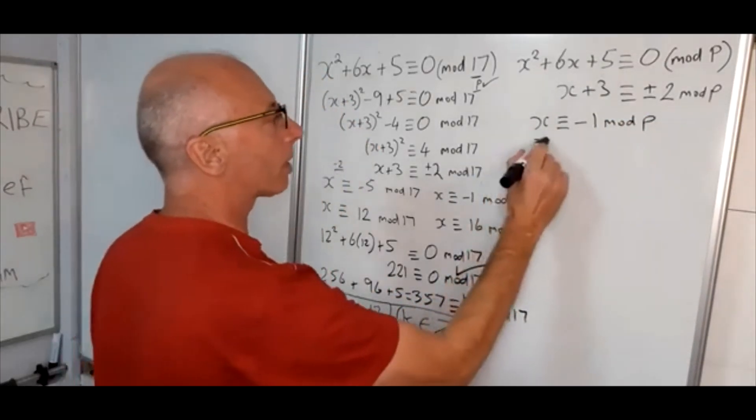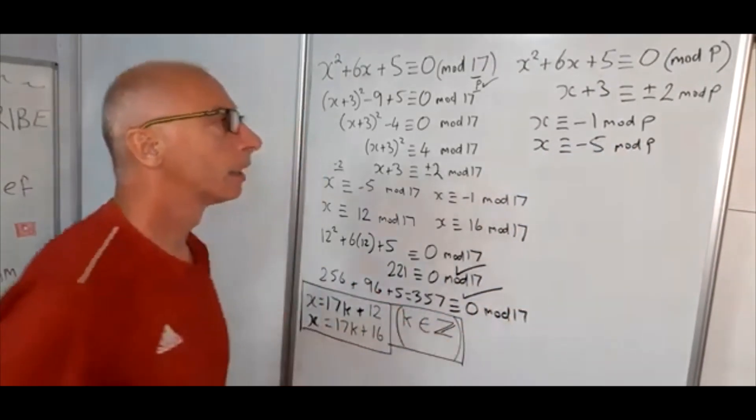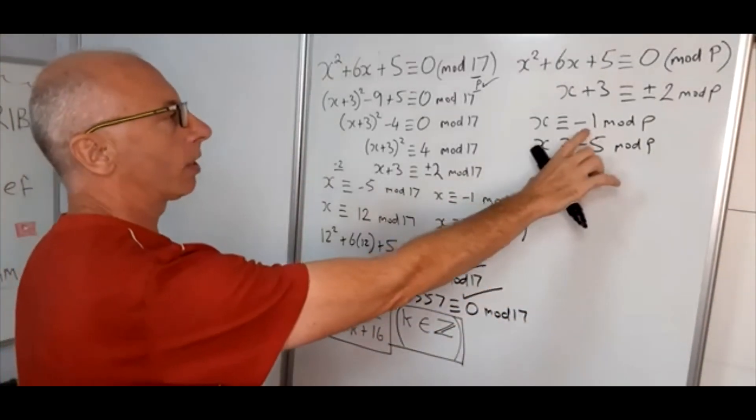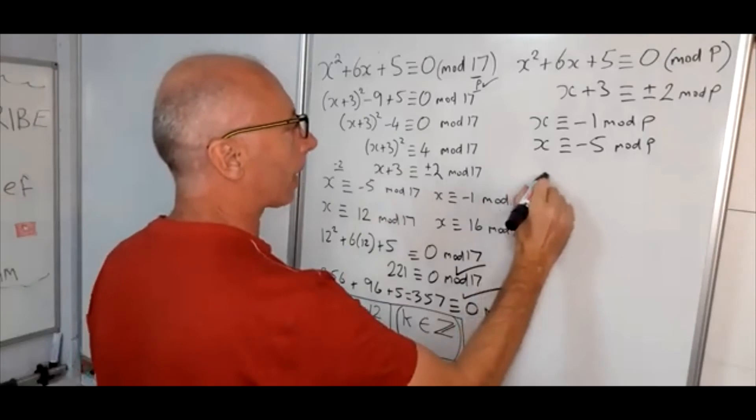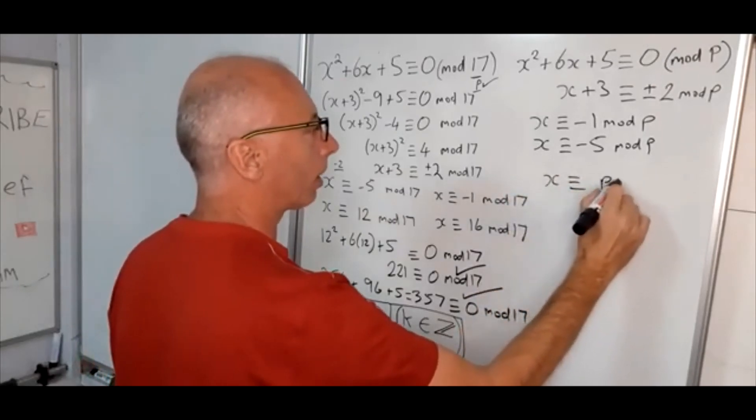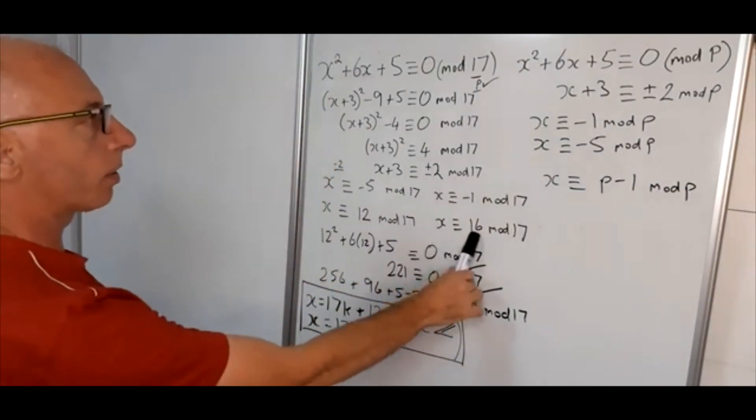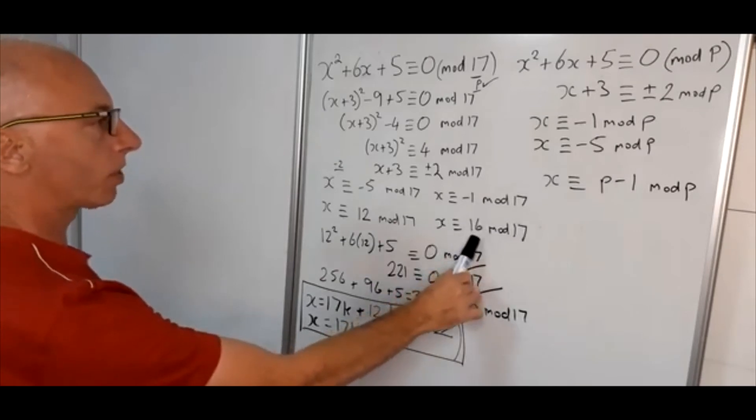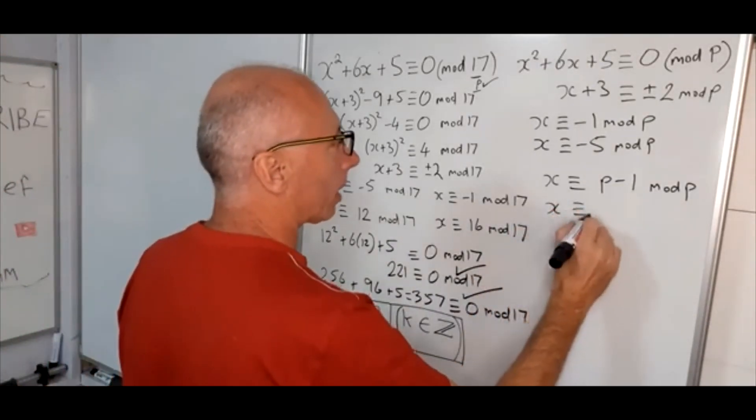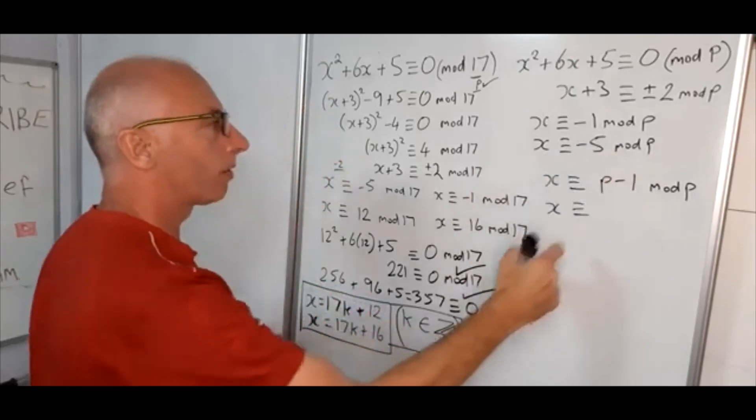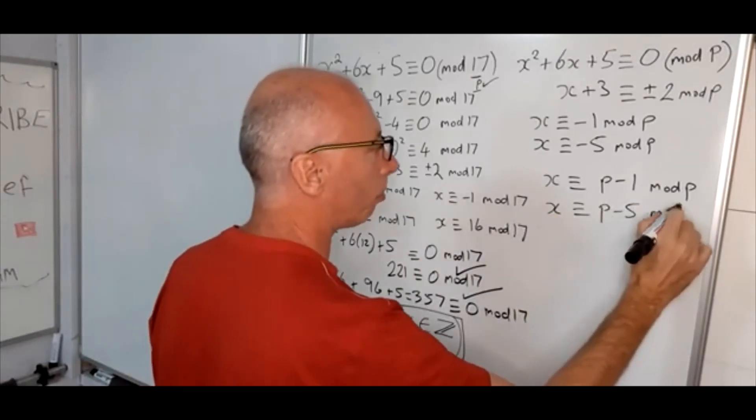And the other one is x is congruent with minus 5 mod p. Okay. So now what we do is, if you've got x is congruent with minus 1 mod p, then what we can say is x is congruent with p minus 1 mod p. Now if you put that into this one here, so there's our case here for the minus 1. We've got 16, p minus 1, 17 minus 1 is 16. And then for the other case, we've got here minus 5. So therefore we can take modulus, x is congruent with p minus 5 mod p.